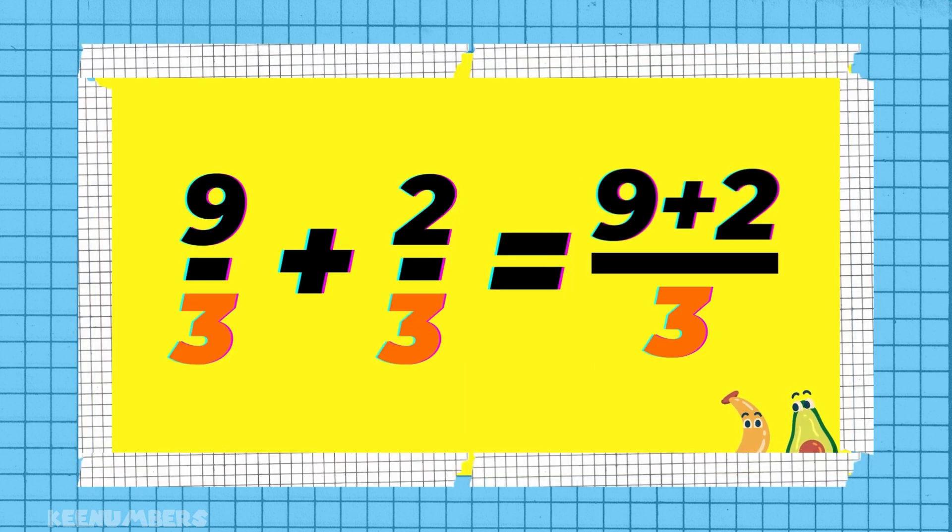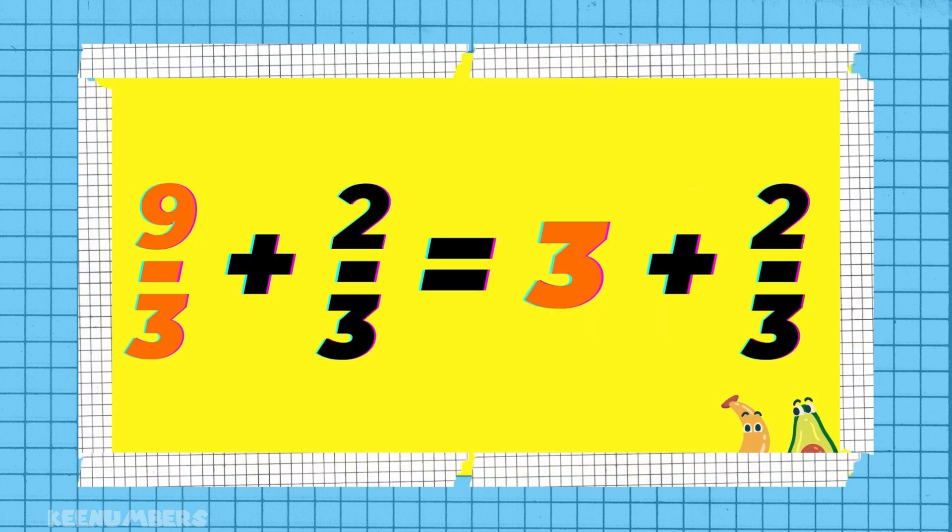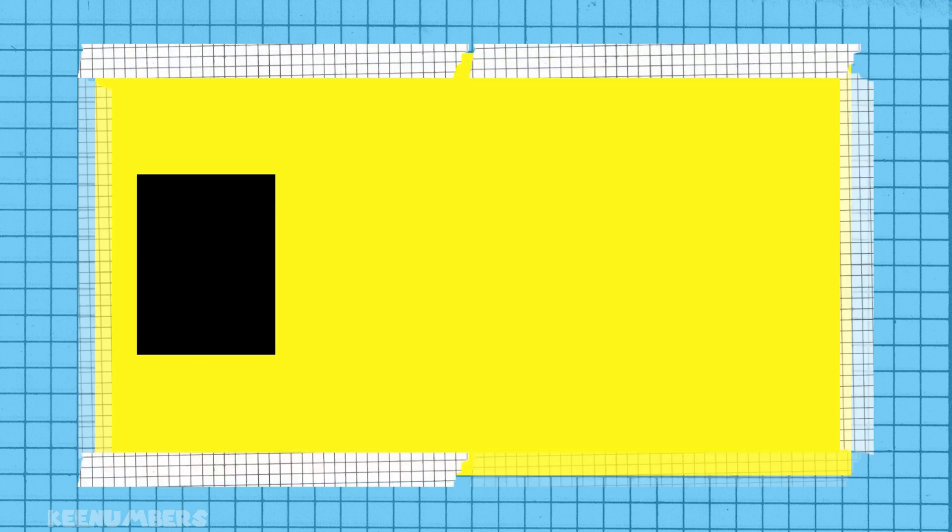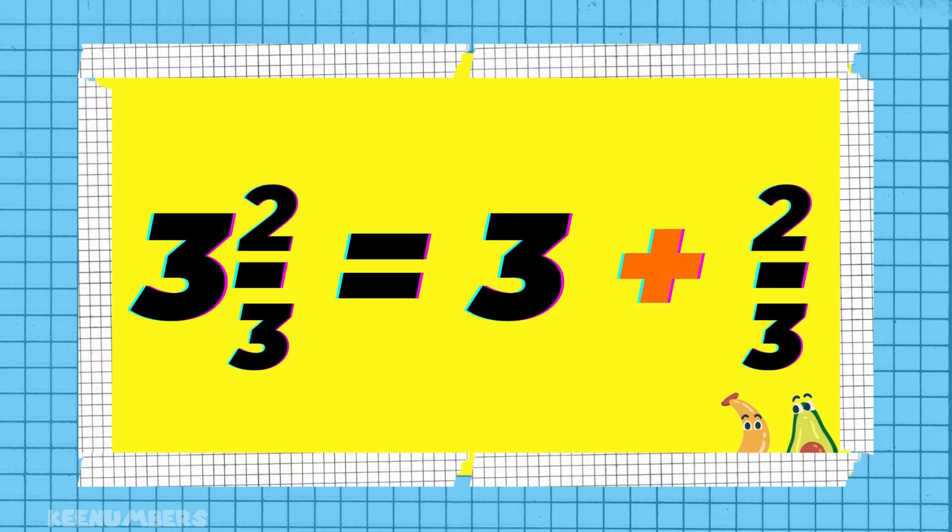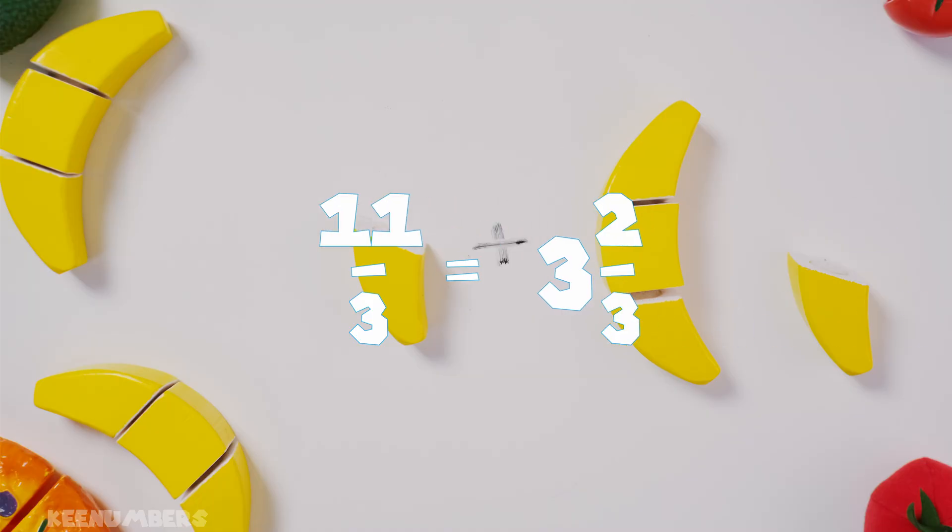We can say, okay, we got how many thirds here? We've got 11 thirds and 3 thirds is equal to 1. So that's 3 whole numbers plus 2 thirds. 3 and 2 thirds. Or you could say 11 thirds. Either one's okay.